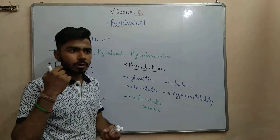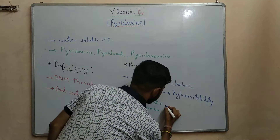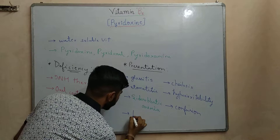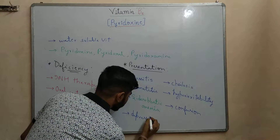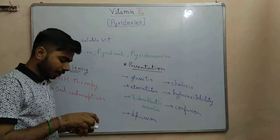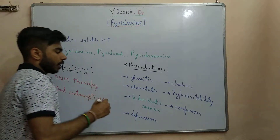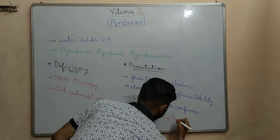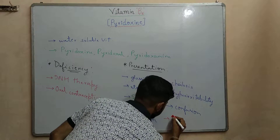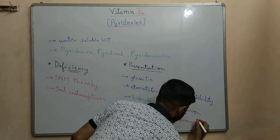Neuronal involvement or brain involvement can also be there in such patients. In that case there can be confusion, so this patient might look confused. Depression can also be there in such patients. And one more important point — homocysteine levels will be elevated in the body of such patients. Homocysteine levels will be increased.